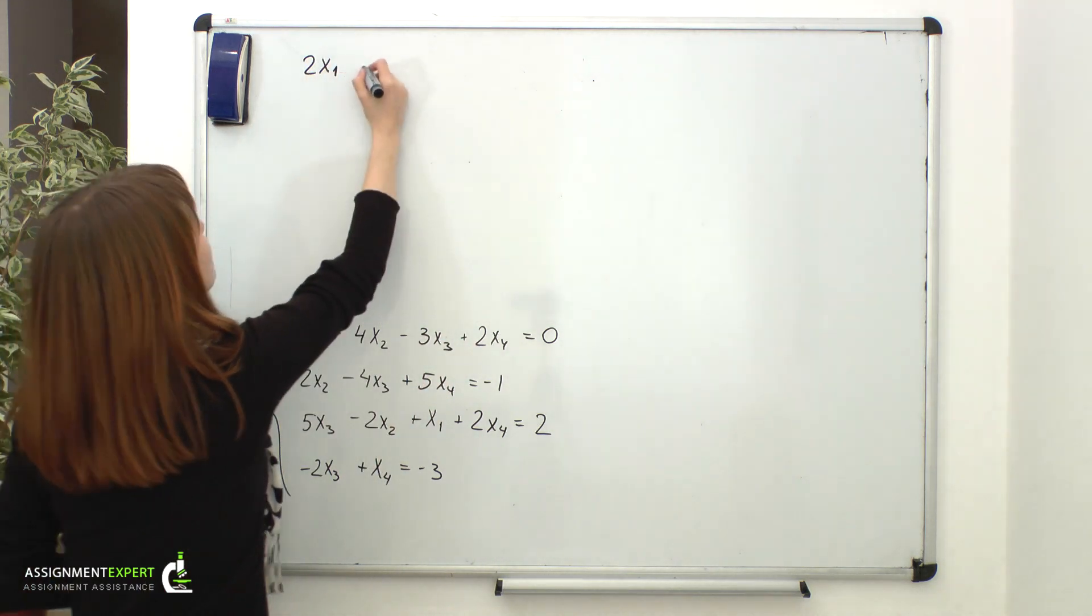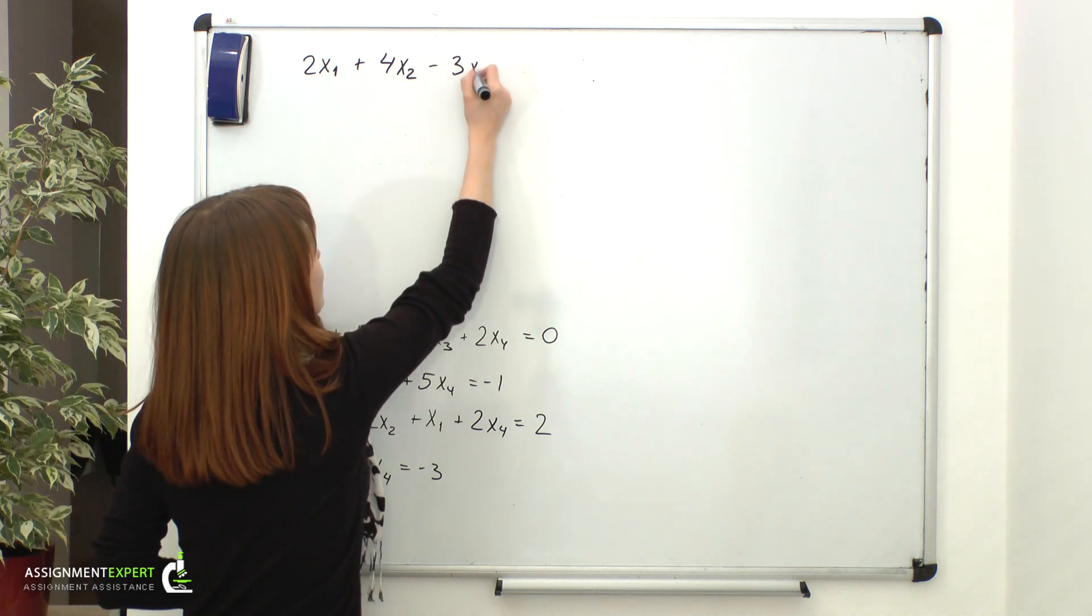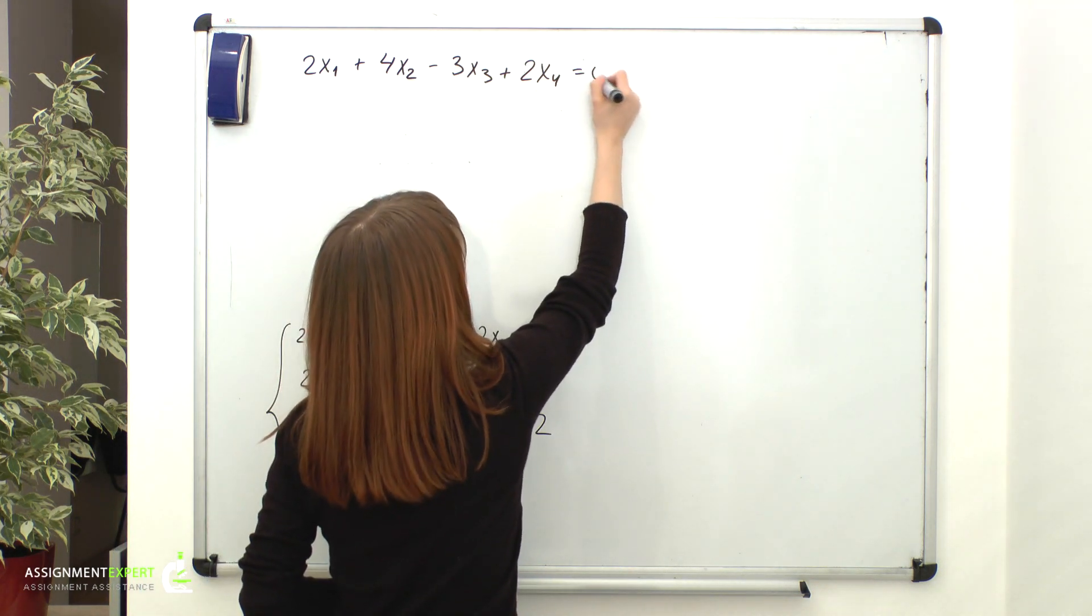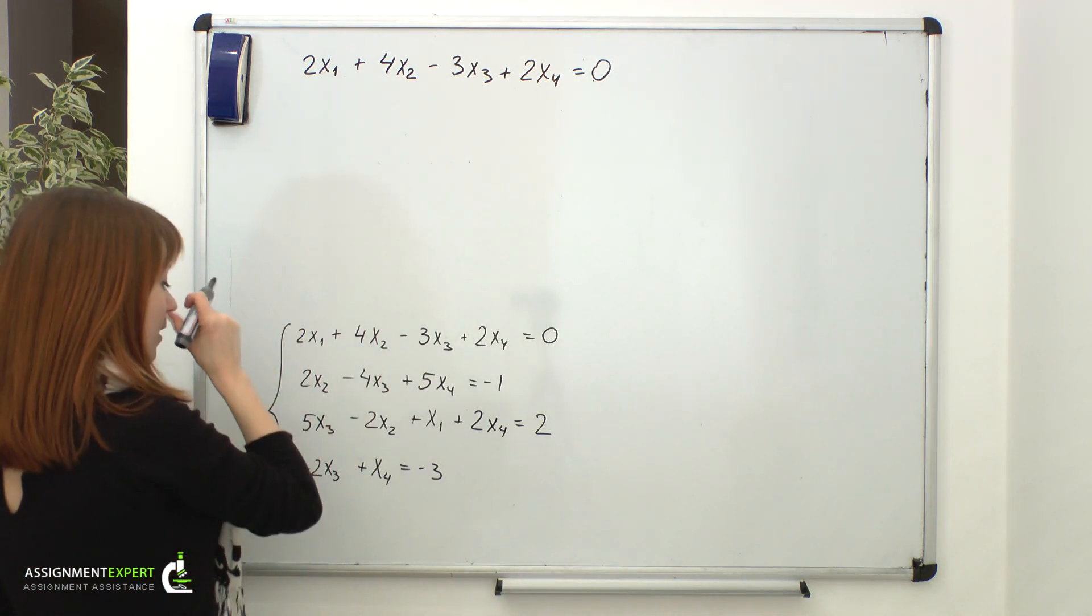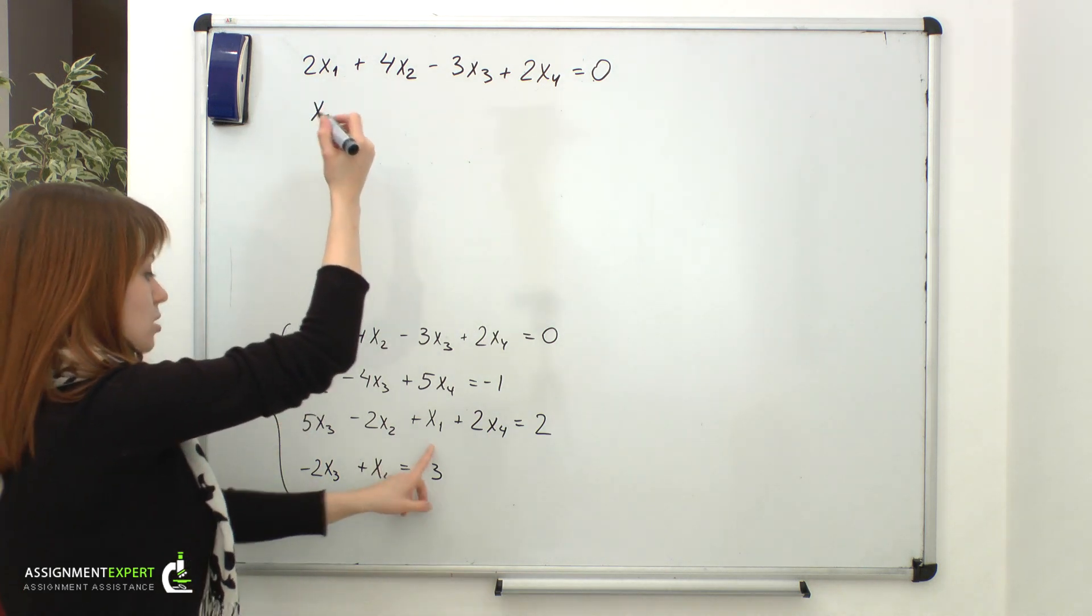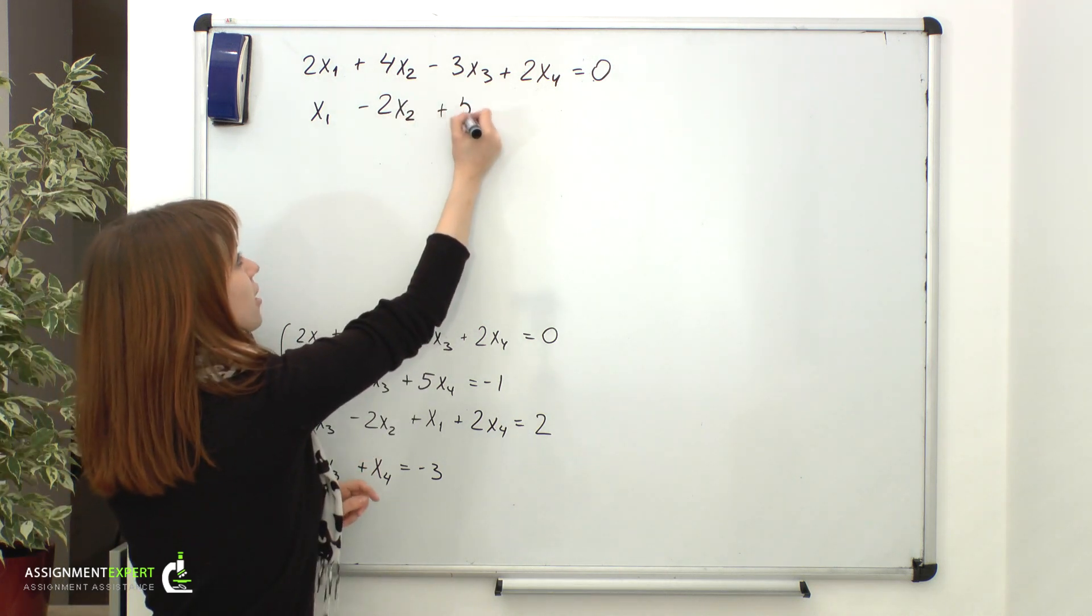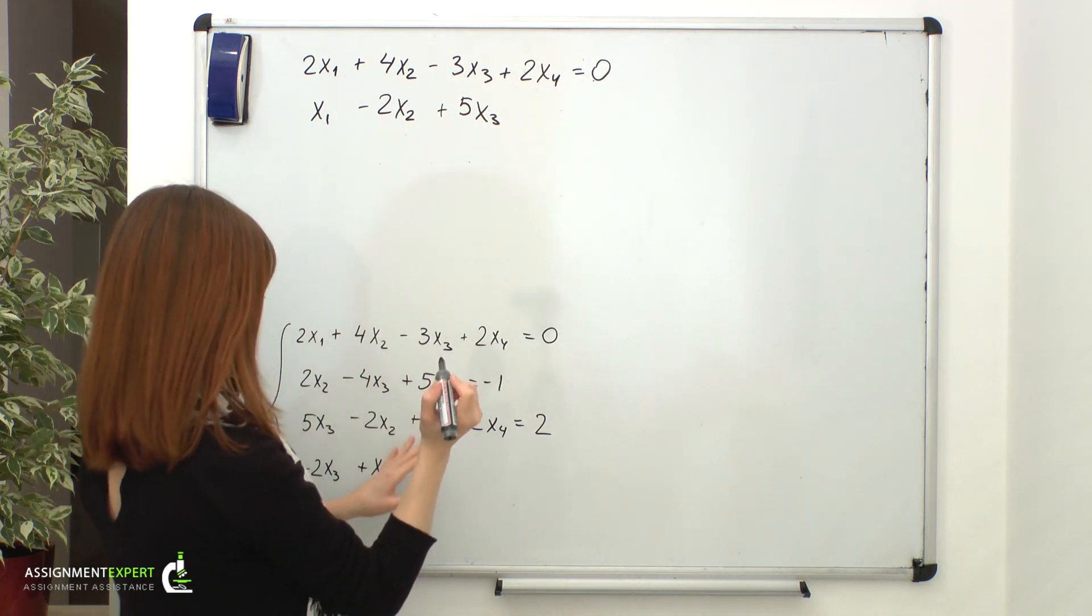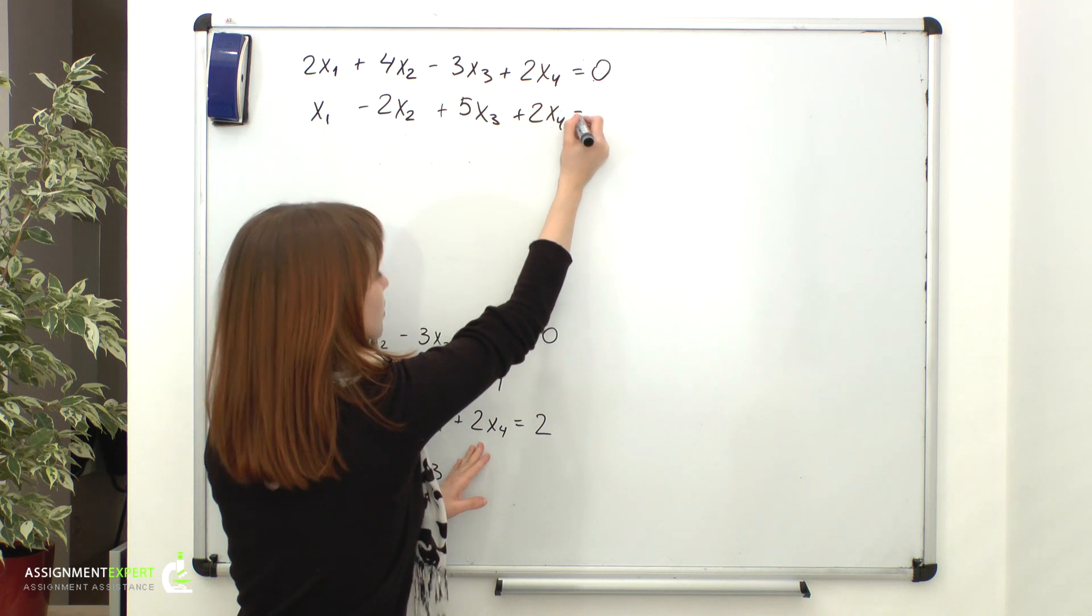Follow me. I go 2x1 plus 4x2 minus 3x3 plus 2x4 and that is equal to 0. So, here I have my first equation with no changes. Then, I have this equation. And it goes like this. x1 minus 2x2 plus 5x3 plus 2x4 and that is equal to 2.